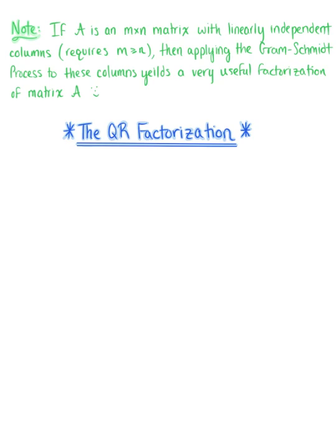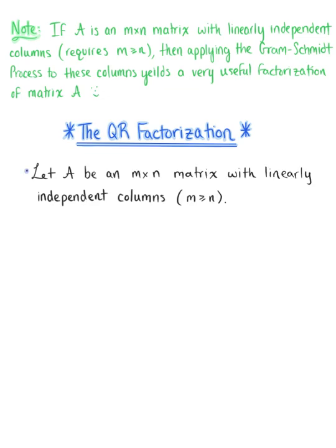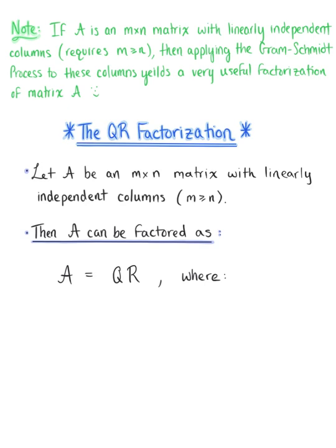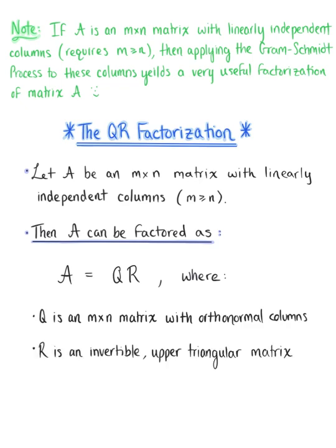If A is an M by N matrix with linearly independent columns, then applying the Gram-Schmidt process to these columns yields a very useful factorization of matrix A into the product of a matrix Q with orthonormal columns and an upper triangular matrix R. This is called the QR factorization. The formal theorem states that matrix A can be factored into A equals Q times R, where Q is an M by N matrix with orthonormal columns and R is an invertible upper triangular matrix.